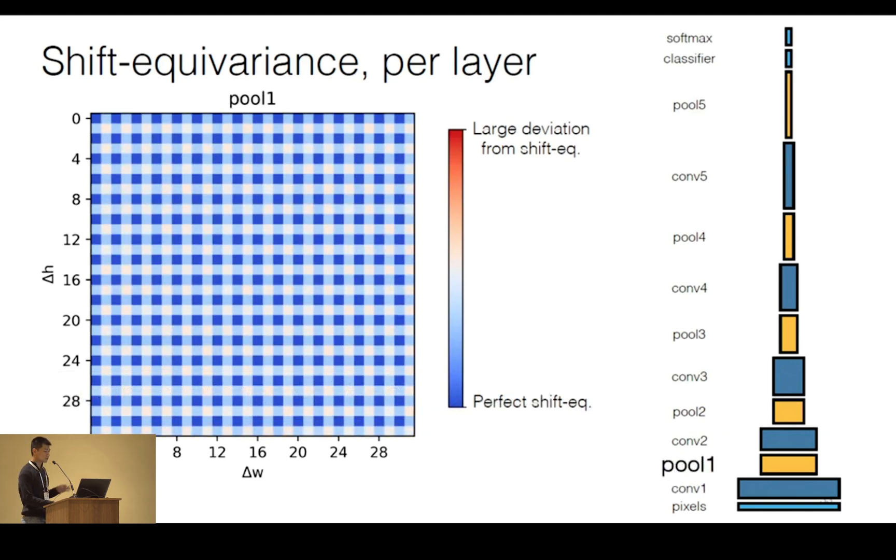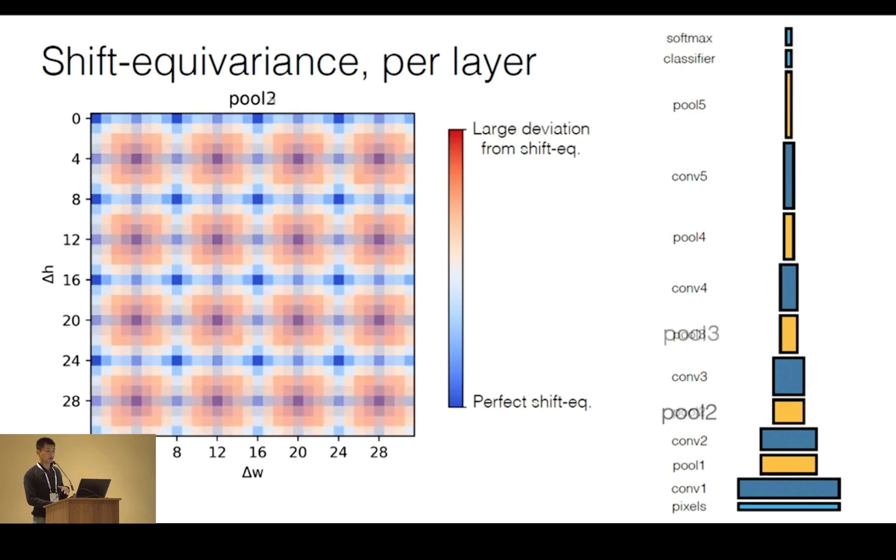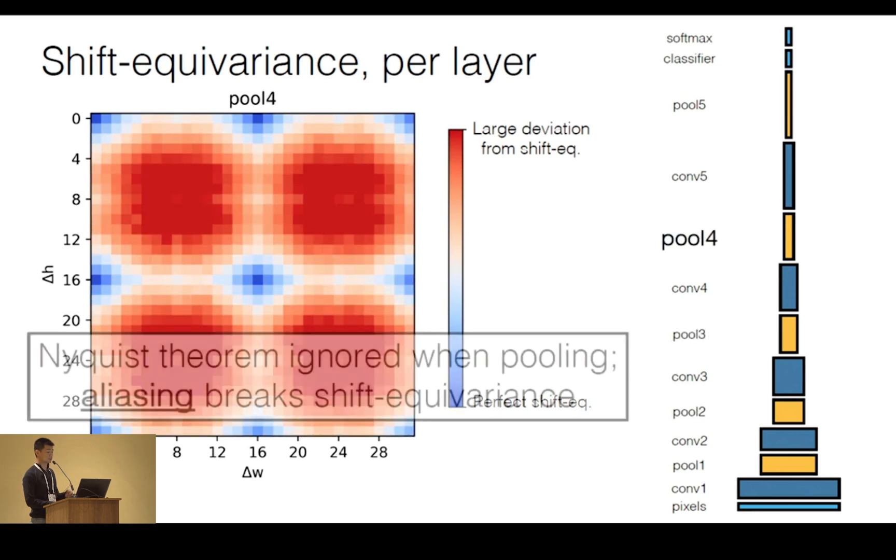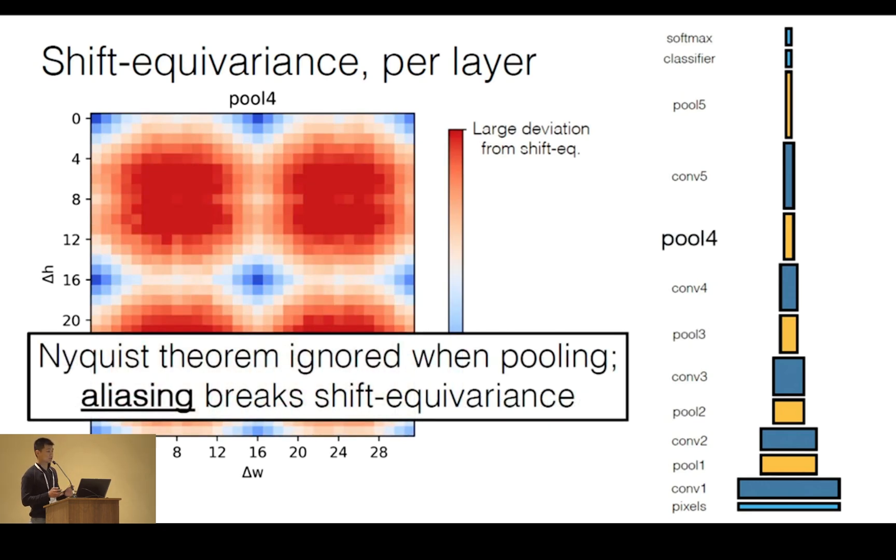But if we go to the first pooling layer, we see this interesting stippling pattern occur. What this means is that even pixel shifts will give the same representation shifted over, but odd pixel shifts will actually give a different representation. And as we go deeper through the network, each pooling layer actually increases the periodicity of the stippling pattern, making things worse and worse. And this is because this layer is downsampling, but it's not taking into account the Nyquist sampling theorem. And this aliasing is breaking shift-equivariance through the network.